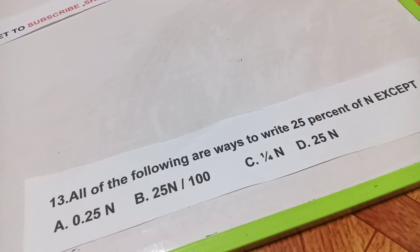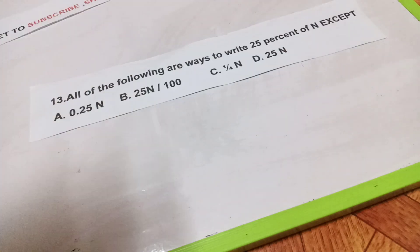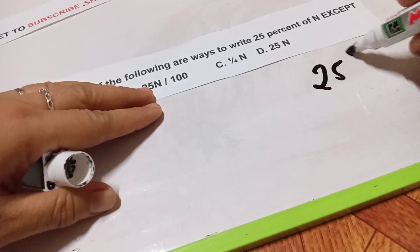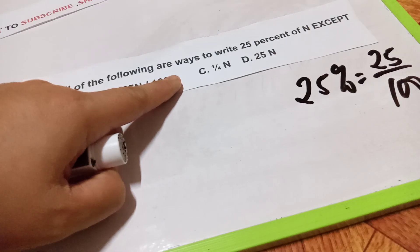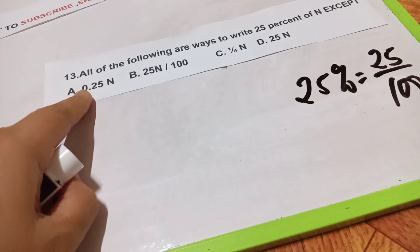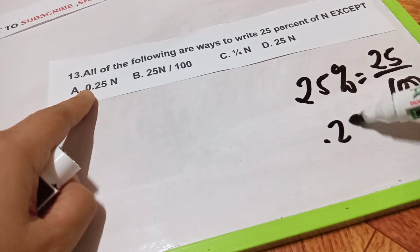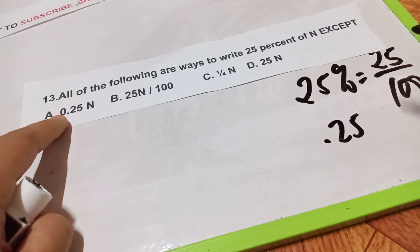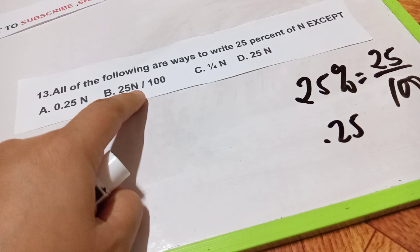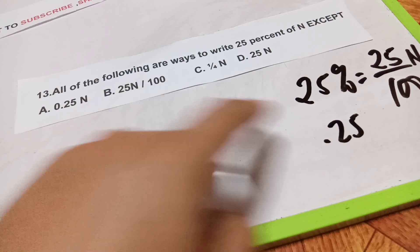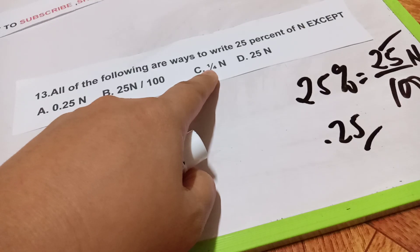Number 13: all of the following are ways to write 25 percent of n, except — note this is an 'except' question, meaning we need to reject one. 25 percent means 25 over 100. We can change this to decimal point 25, or write it as 0.25 times n. We can also write 25 over n.